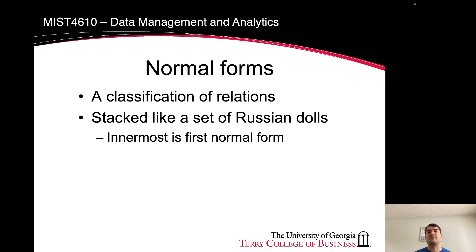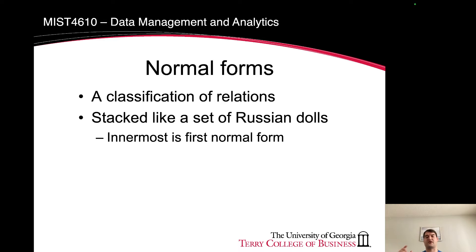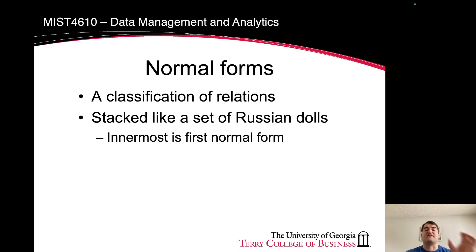The other key thing that can cause something to be in zero normal form is if you have two entities that have a many-to-many relationship. Instead of addressing that with an associative entity — where you take the primary keys and put them into that associative entity as a composite primary key and as foreign keys — if you address that by having value one, value two, value three, and so forth, that would also be something that's not well-formed and would cause that entity to be in zero normal form.